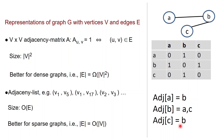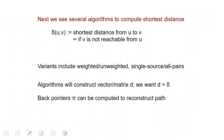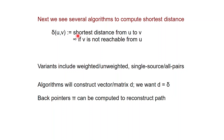In this lecture and the next ones, we are going to see a large number of algorithms whose goal is generally to compute the shortest distance in the graph between two nodes. We denote by the Greek letter delta the shortest distance between two nodes. Delta(U, V) is the shortest distance from U to V in a given graph. If V is not reachable from U, then by convention we set delta to be infinity.